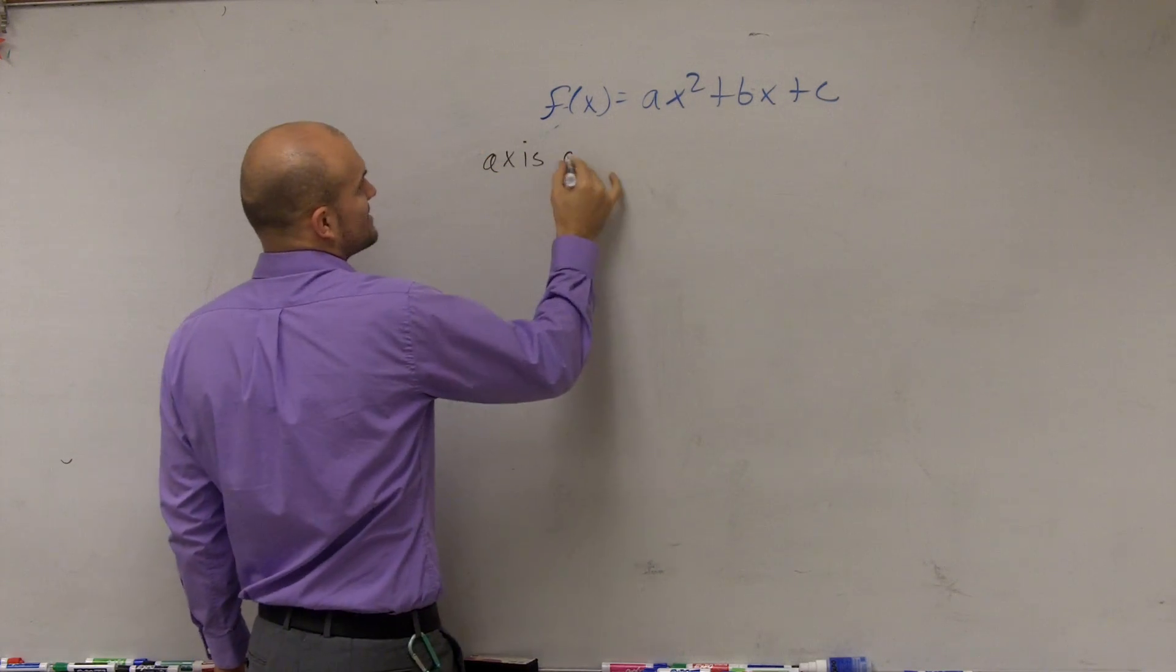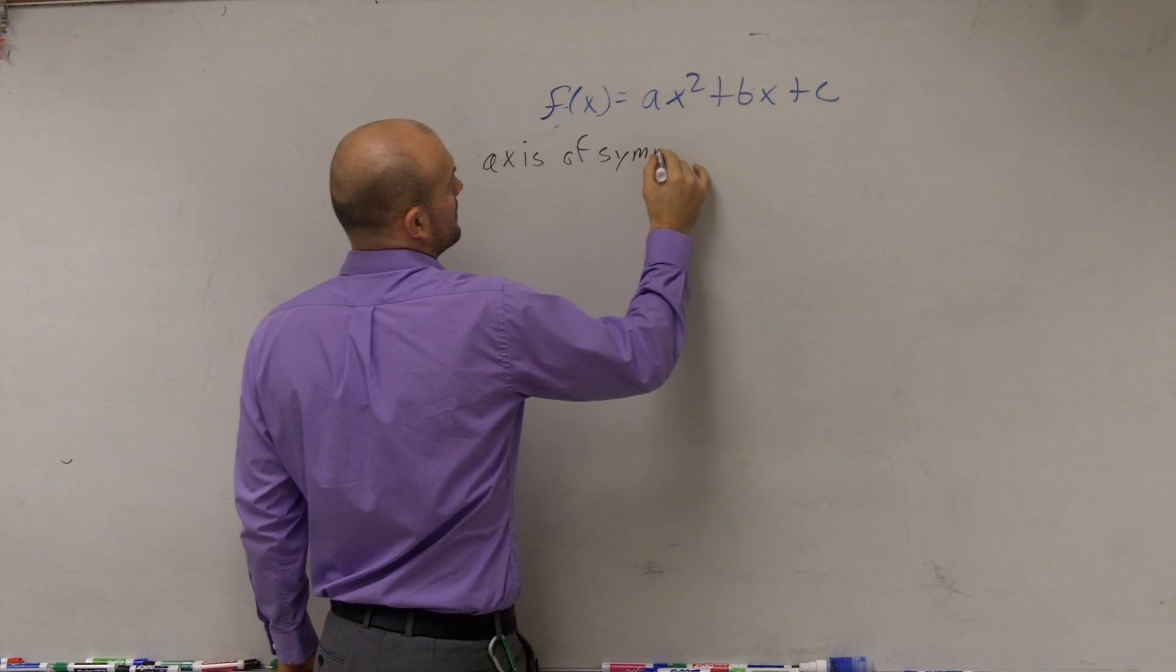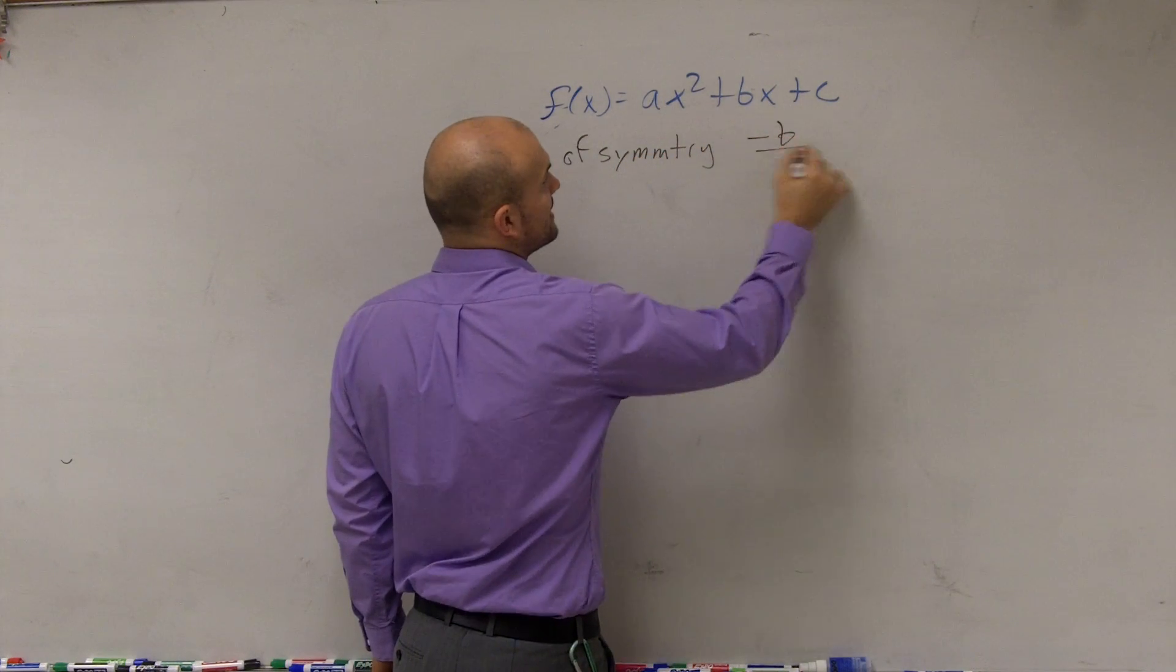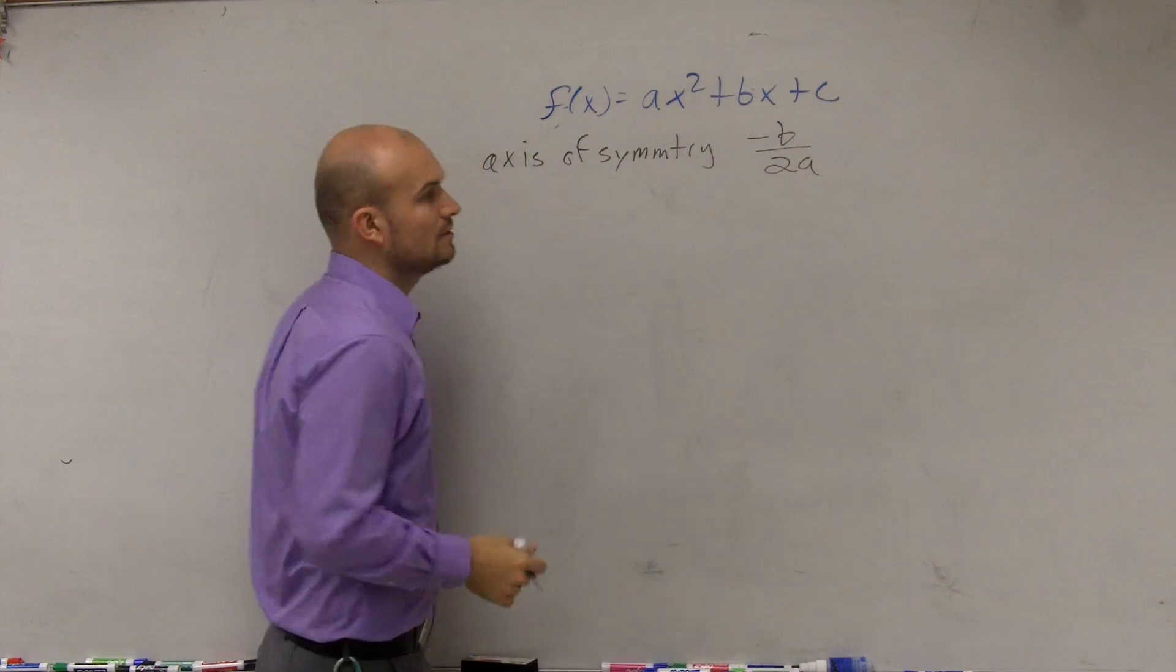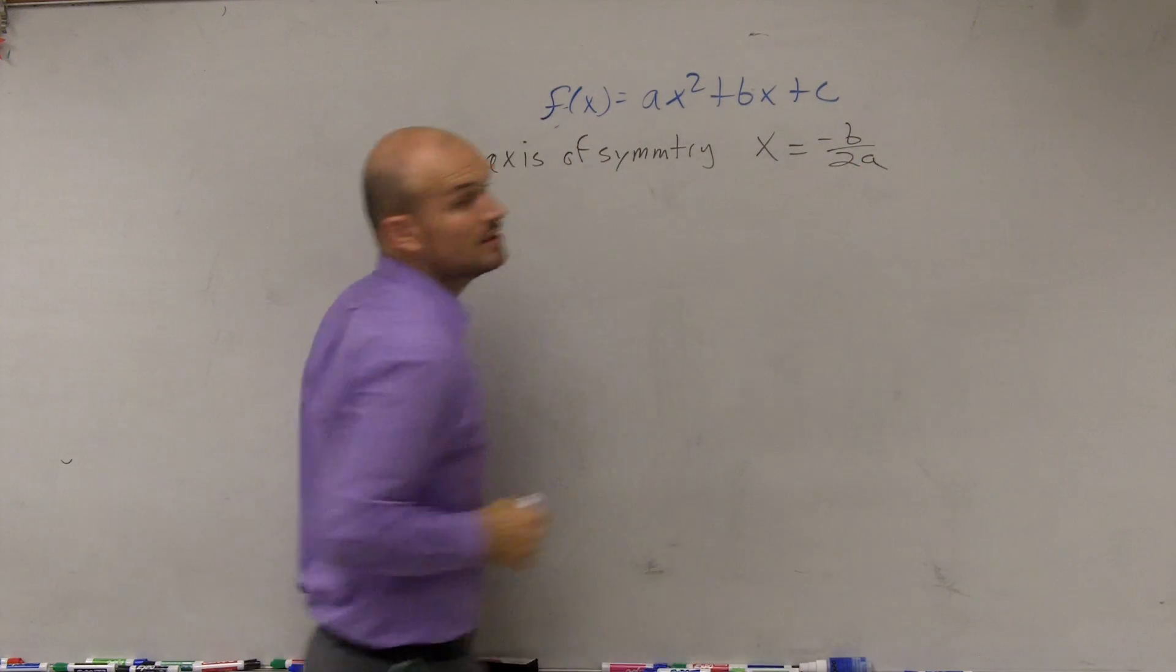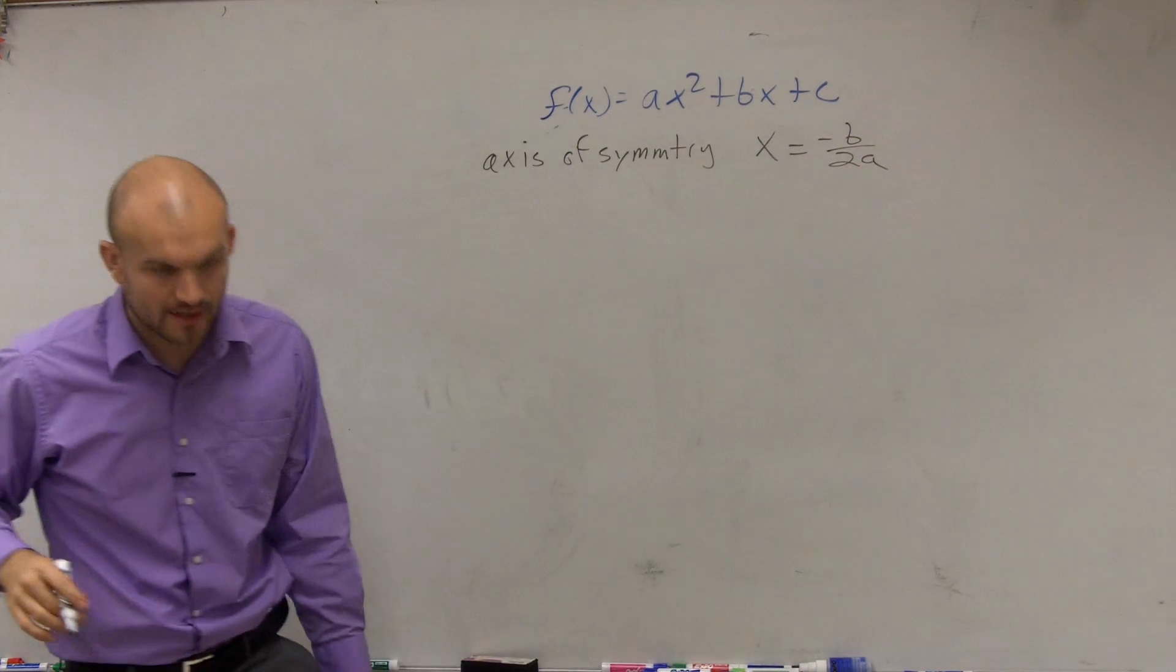First thing we took out of this is we could always find the axis of symmetry. So remember, we had the axis of symmetry, and the axis of symmetry was negative b divided by 2a. It's a line x equals negative b divided by 2a. Does everybody remember that?